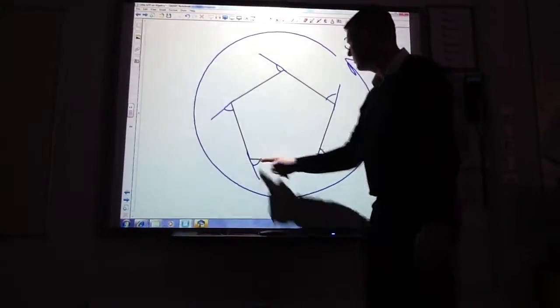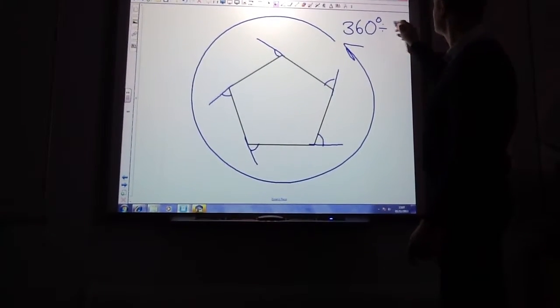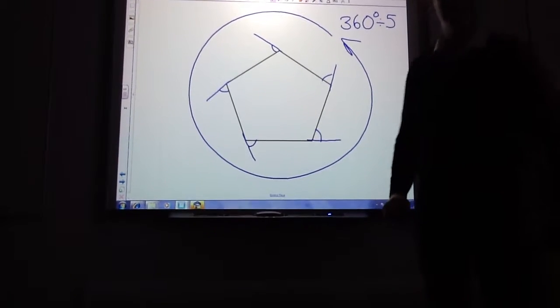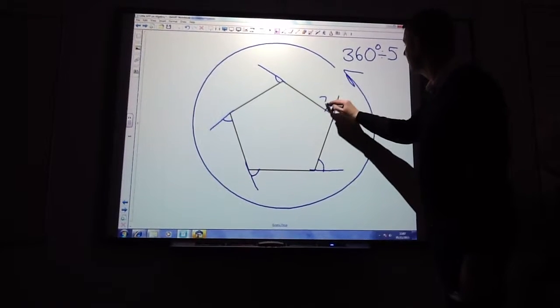One, two, three, four, five. So the answer to the external angle is 360 divided by five. If I were to do that on my calculator, I would find that the answer was 72.